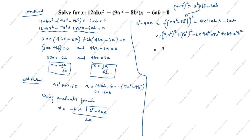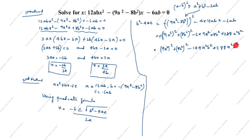Expanding: (9a²)² plus (8b²)² minus 2 times 9a² times 8b² gives 81a⁴ plus 64b⁴ minus 144a²b². The 4ac term gives plus 288a²b². So combining the a²b² terms: plus 288 minus 144 equals plus 144a²b².